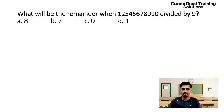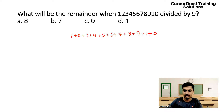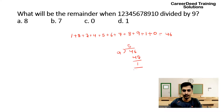So here you have 1, 2, 3, 4, 5, 6, 7, 8, 9 plus 1 plus 0. If you add everything: 1+2=3, 3+3=6, 6+4=10, 10+5=15, 15+6=21, 21+7=28, 28+8=36, 36+9=45, 45+1=46, 46+0=46. Now when you divide 46 by 9: 5 nines are 45, the remainder is 1. So the actual remainder for this number is 1.